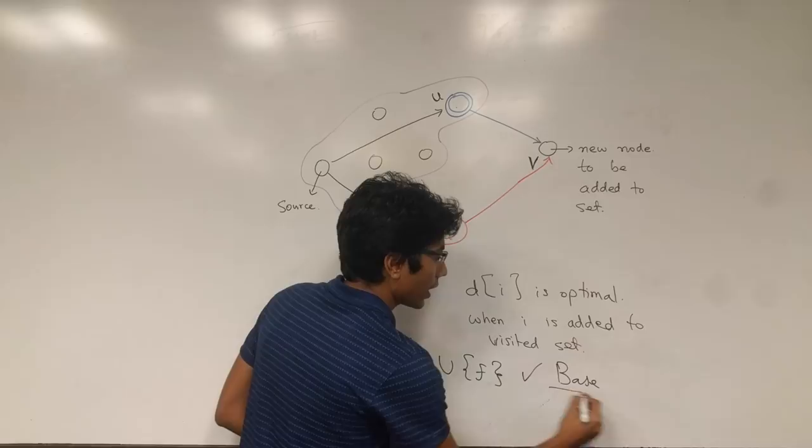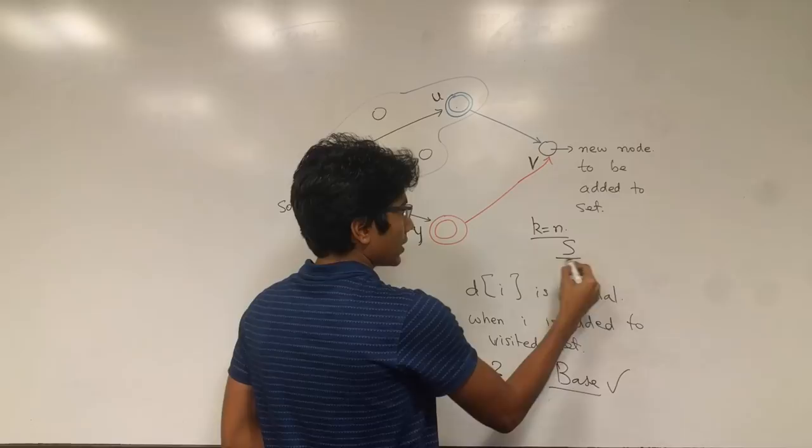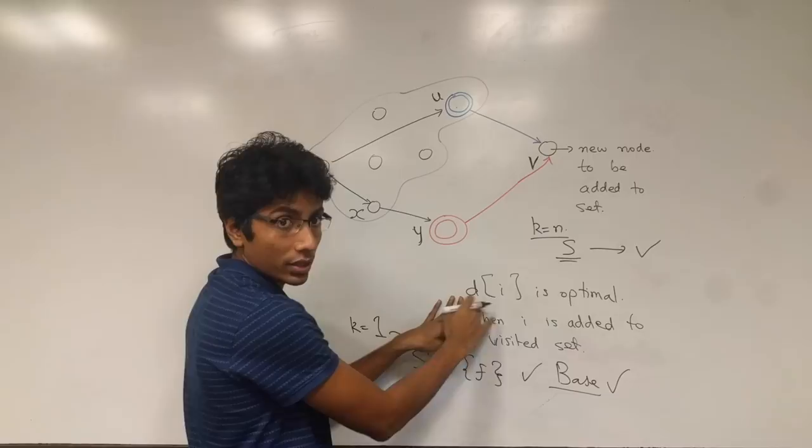The second step is the assumption. So after n cities have been added to the set, right the set has changed, we'll assume that the condition of optimal distances to all of these entities is true.